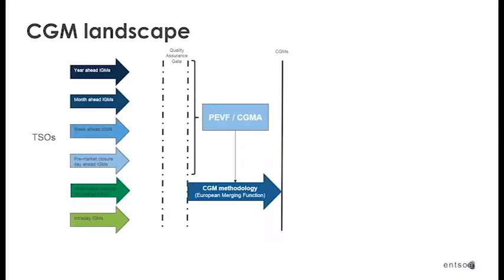I'll start with the landscape. We get from TSOs their individual grid models — that is simply the network state at one particular time where all line flows, voltages, and network parameters are known. That gives a network state at a particular time, covering different time frames from year ahead up to intraday. TSOs prepare the IGMs and send them to our CGM platform through a quality assurance gate, where these models are then aligned.